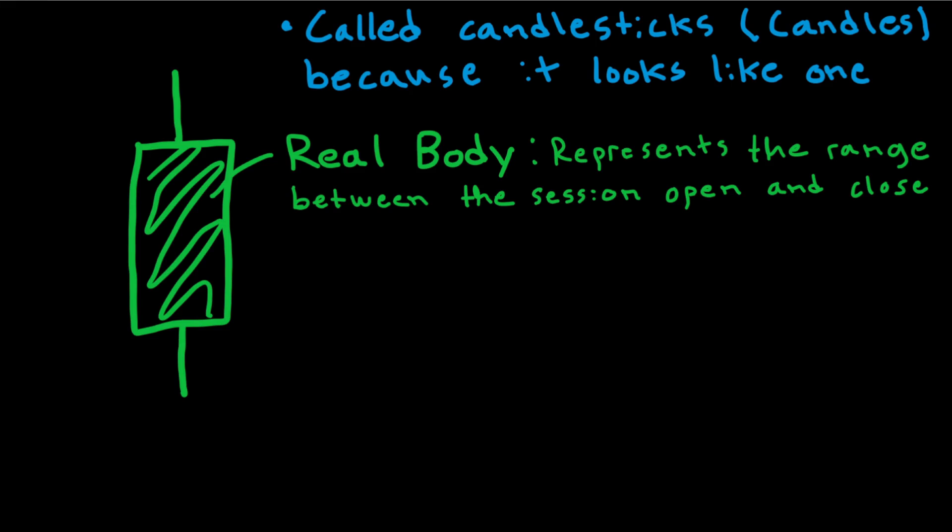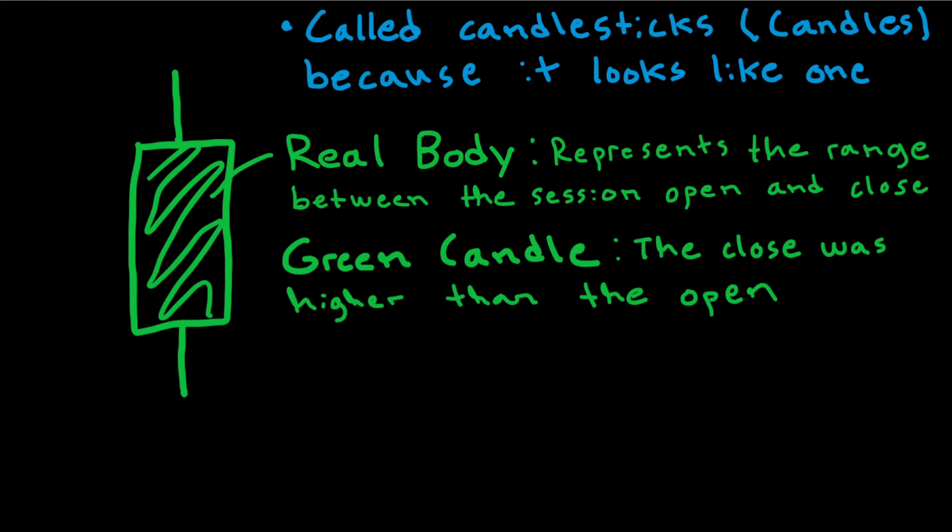When the candle is green, like it is here, what does it mean? Well, it means that the close was higher than the open. This means that in this case, the candle opens at this level. It can, for example, be, let's say it's $10 here. And it closes at this level. It could, for example, be, let's say it's $11.